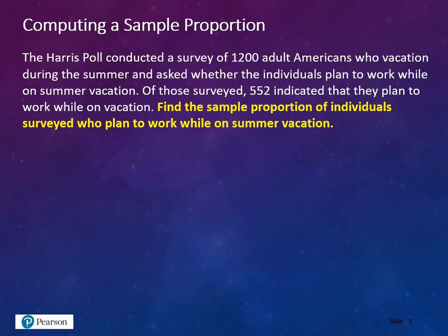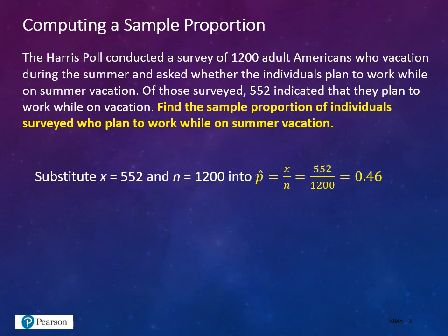The Harris Poll conducted a survey of 1,200 adult Americans who vacationed during the summer and asked whether the individuals planned to work while on summer vacation. Of those surveyed, 552 indicated that they planned to work while on vacation. So p-hat equals 552 over 1,200, which is 0.46 — about 46% of the individuals plan on working during summer vacation.